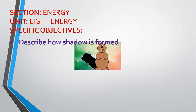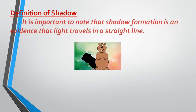In today's lesson we are going to describe how shadow is formed. Now, before we touch on the definition of shadow, it is important to note that shadow formation is an evidence that light travels in a straight line. Another evidence is what we looked at yesterday — the operation of the pinhole camera is also an evidence that light travels in a straight line. So let's take note of these important evidences.